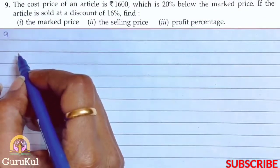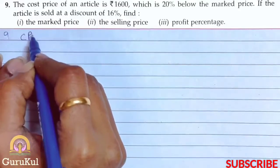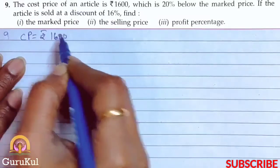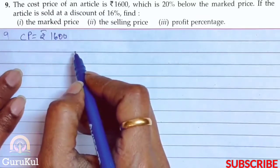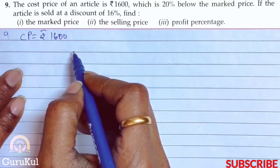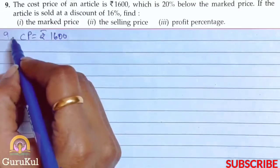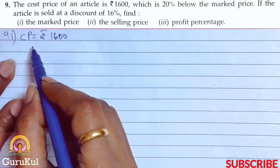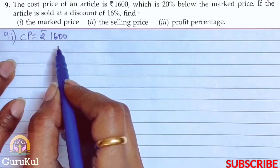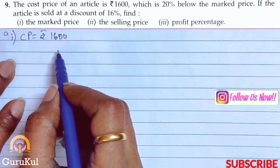Question number 9. The cost price of an article is rupees 1600, which is 20% below the marked price. If the article is sold at a discount of 16%, we need to find: first, the marked price.